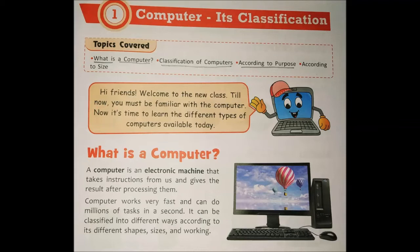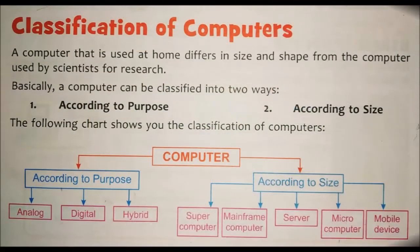Next topic is Classification of Computer. A computer that is used at home differs in size and shape from the computer used by scientists for research. Computers used at home are different from those used in research stations, companies, or space. Computer can be classified into two ways: according to purpose and according to size.